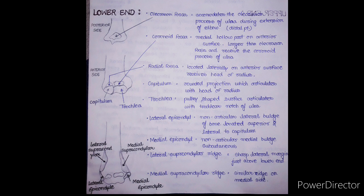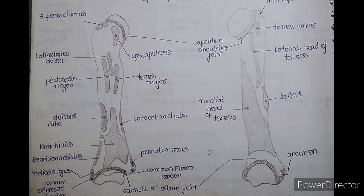The two processes of the lower end are the capitulum and the trochlea. The capitulum is a rounded projection that articulates with the head of the radius. The trochlea articulates with the trochlear notch of the ulna. The two epicondyles — lateral and medial — are non-articular, meaning nothing directly articulates with them. Above the epicondyles are the lateral supracondyle and the medial supracondyle.